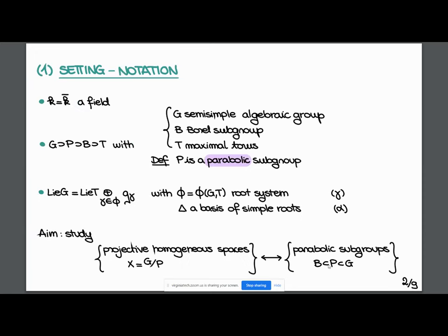First, we fix K, an algebraically closed field. For now, we don't fix any characteristic. We fix G, B, and T: a semisimple algebraic group, a Borel subgroup contained in it, and a maximal torus. We consider the Lie algebra and the T action on it by conjugation. We denote as G_gamma the root spaces and phi is our root system. Gamma denotes any root and alpha a simple positive root. Delta is a basis and alpha denotes a simple root.